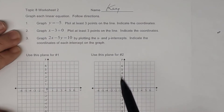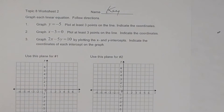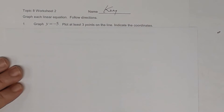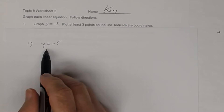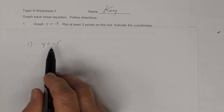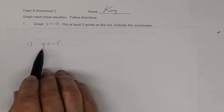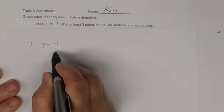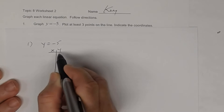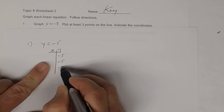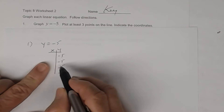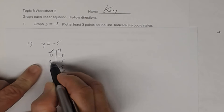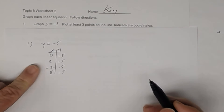So let's look at number 1. The way you want to think about number 1 — and I'll go ahead and do these on a separate sheet of paper just to explain this — we have y equals negative 5. Remember, what this means is that y is always going to equal negative 5. There's no x. So if I were to use a t-table, y will always equal negative 5 all the way down, no matter what x is.